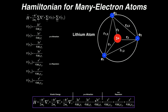All the terms up to this point are negative because kinetic energy and attractive forces are considered favorable. The repulsions are unfavorable, so they're all positive. Between electrons 1 and 2, the repulsion potential energy is e squared over 4 pi epsilon zero r12. Between 1 and 3, it's e squared over 4 pi epsilon zero r13. And between electrons 2 and 3, the repulsion is e squared over 4 pi epsilon zero r23.